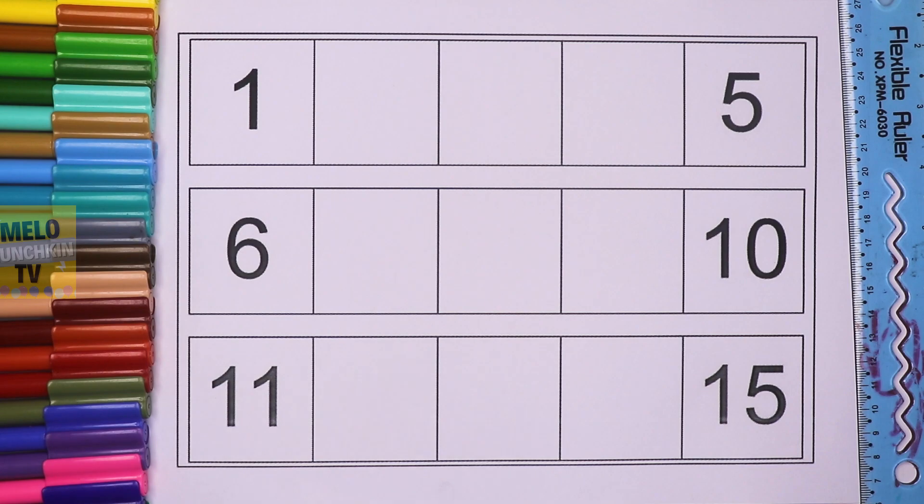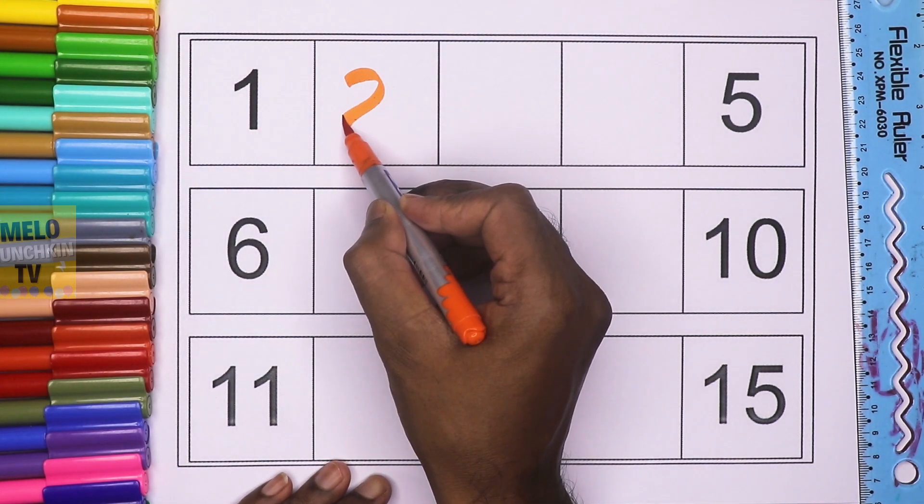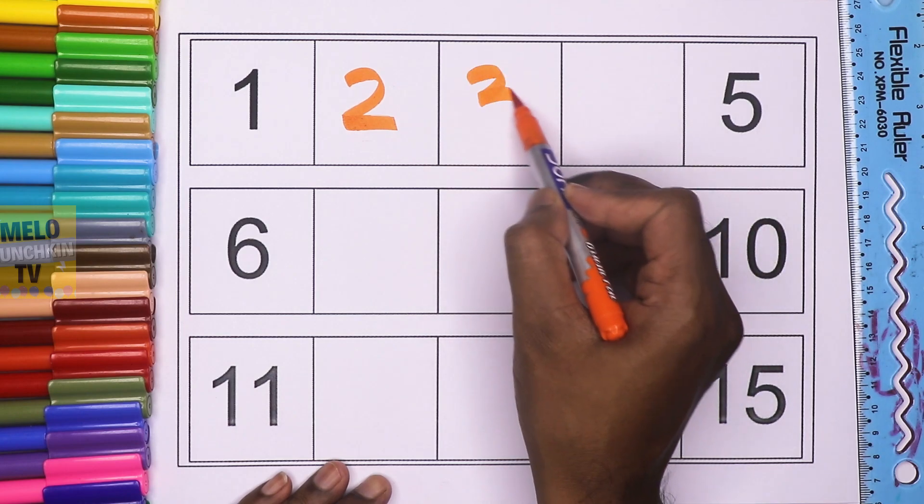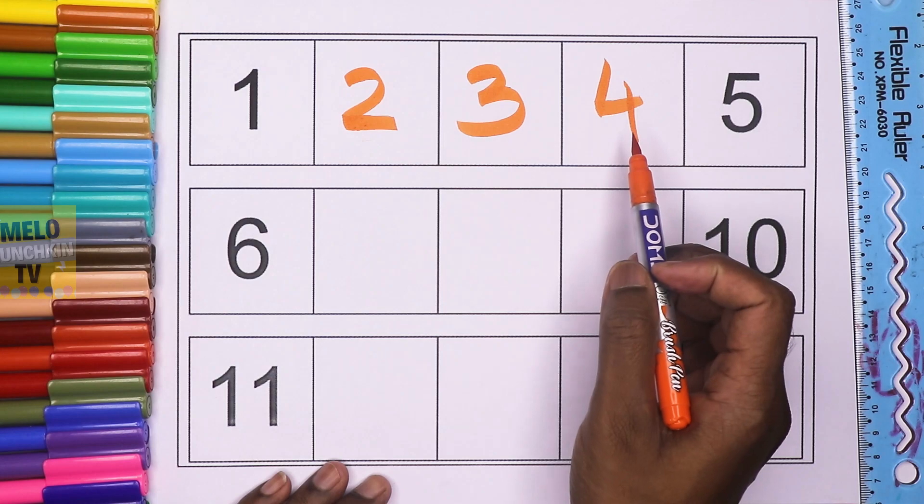So what comes between 1 and 5? After 1: 2, then 3, then 4. 1, 2, 3, 4.